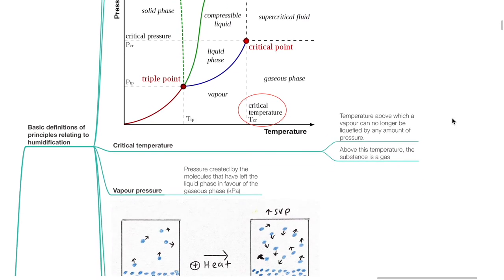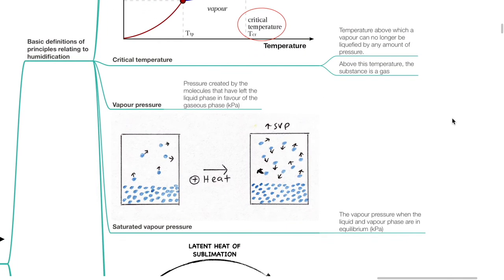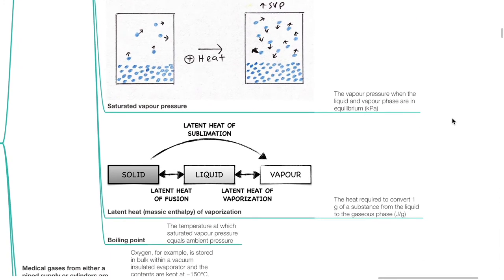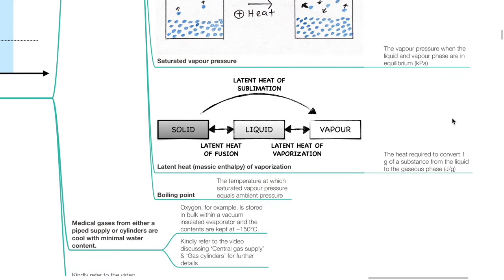Vapor pressure is the pressure created by the molecules that have left the liquid phase in favor of the gaseous phase, measured in kPa. Saturated vapor pressure is the vapor pressure when the liquid and vapor phase are in equilibrium. Latent heat of vaporization is the heat required to convert 1 gram of a substance from the liquid to gaseous phase, measured in joules per gram. Boiling point is the temperature at which saturated vapor pressure equals ambient pressure.